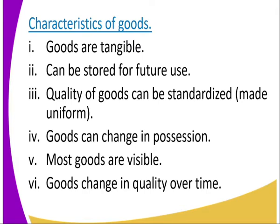Number three, the quality of goods can be standardized — made uniform. For example, books used in the Kenya curriculum are standardized; they are produced and then someone goes through them and standardizes them. Number four, goods can change in possession. Today I am possessing a laptop, but I can send it to someone and the possession has changed from me to the other person.